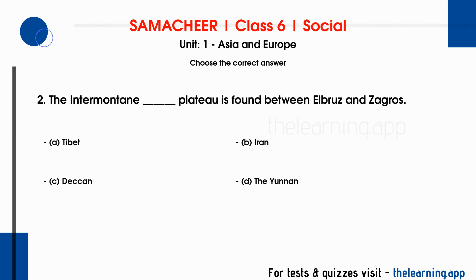Question 2: The intermontane plateau is found between Elbrus and Zagros. Options are: A. Tibet, B. Iran, C. Deccan, D. the Yunnan. Correct answer is B, Iran.